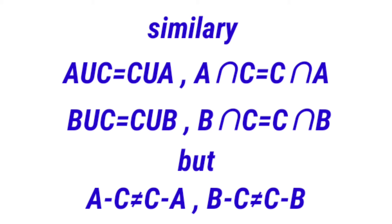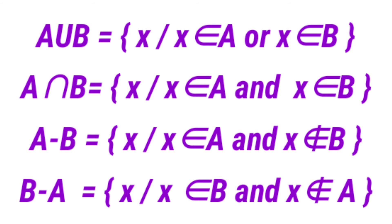We represent these properties in set builder form. A union B equals x such that x belongs to A or x belongs to B. A intersection B equals x such that x belongs to A and x belongs to B. A minus B equals x such that x belongs to A and x does not belong to B.